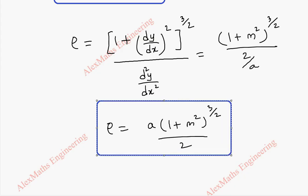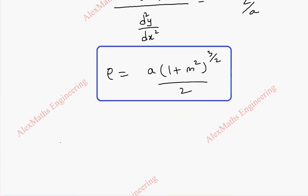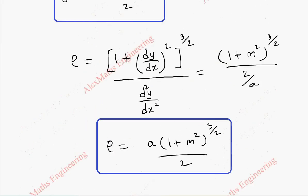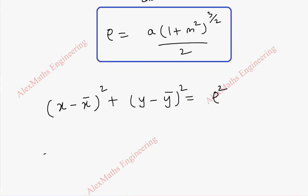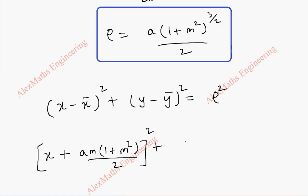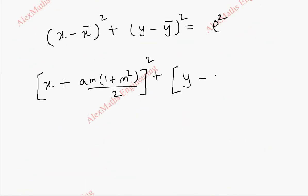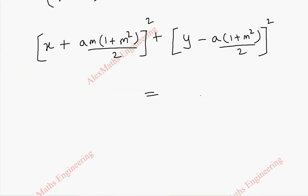After getting x̄, ȳ, and rho, the formula for the circle of curvature is (x minus x̄)² plus (y minus ȳ)² equal to rho². Now x minus x̄: already there is a minus, so this becomes plus am(1 plus m²) divided by 2. And y minus ȳ value is a(1 plus m²) divided by 2.